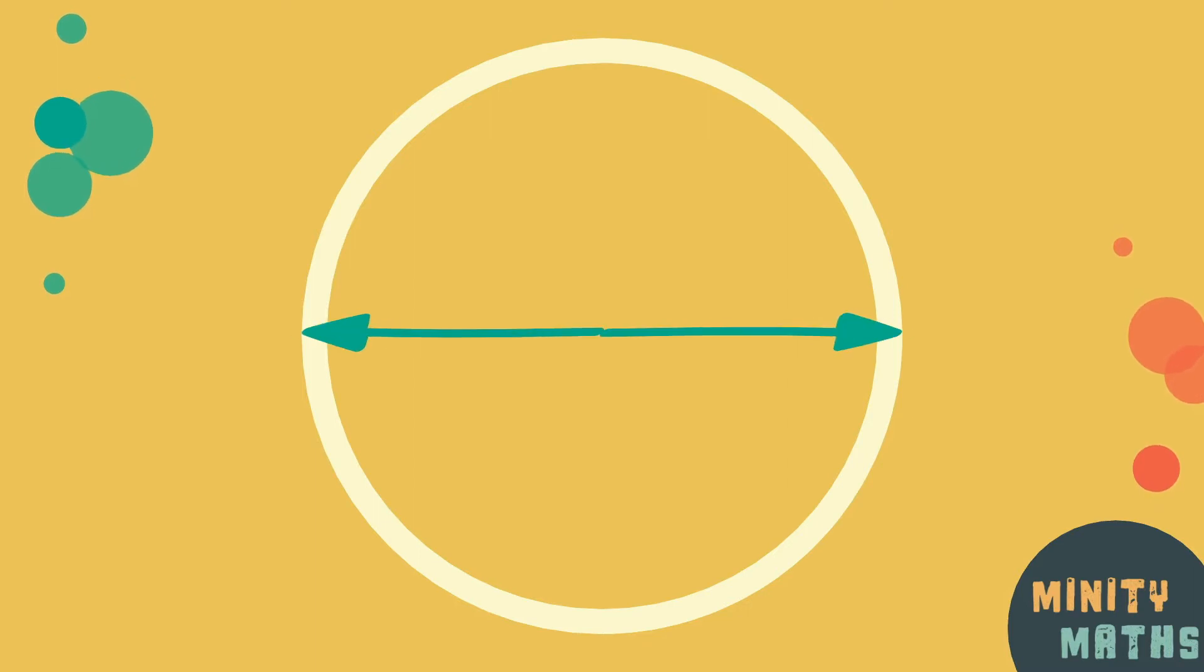The distance across the whole width and through the centre of the circle is called the diameter.